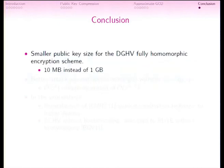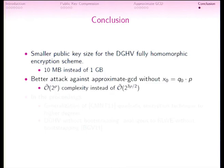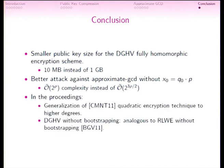To conclude, I have shown two things: a smaller public key for the DGHV scheme — 10 megabytes instead of 1 gigabyte — and a better attack against the approximate GCD without X0, with complexity 2^ρ instead of 2^(3ρ/2). In the proceedings, we also show a generalization of our quadratic encryption technique to higher degrees, and that DGHV can be done without bootstrapping, using modular switching — analogous to what was done by Brakerski, Gentry, and Vaikuntanathan with the RLWE scheme.